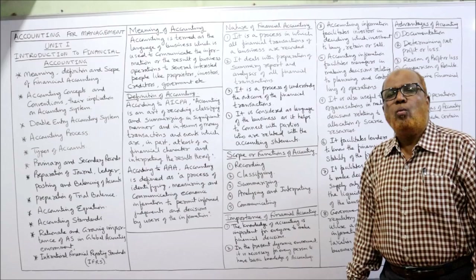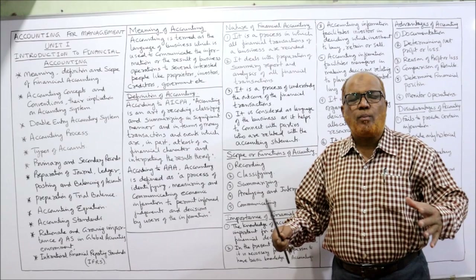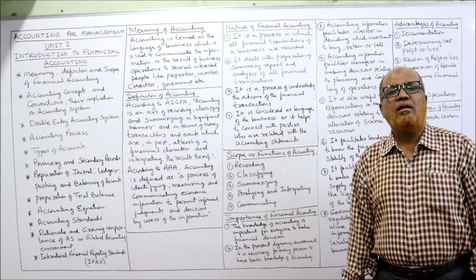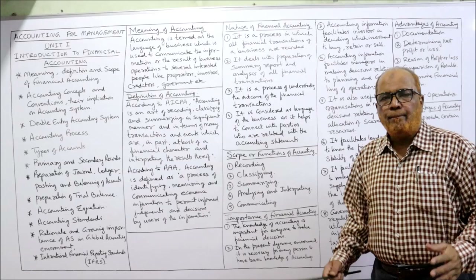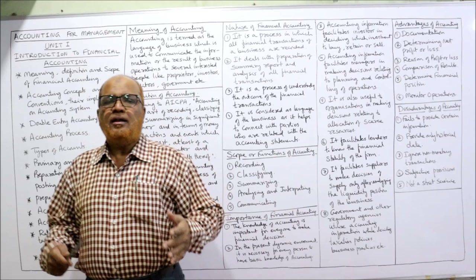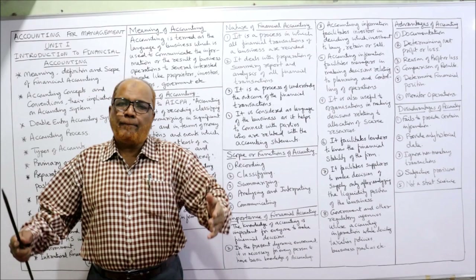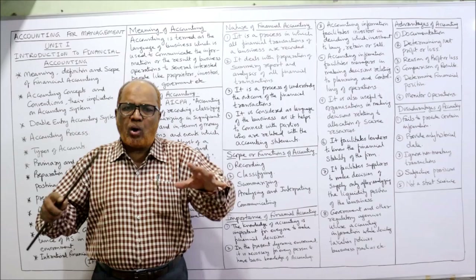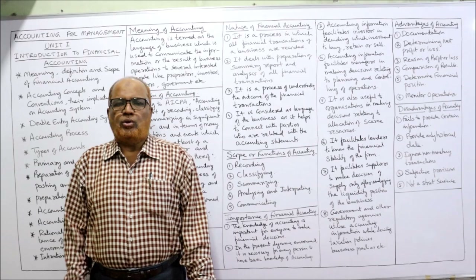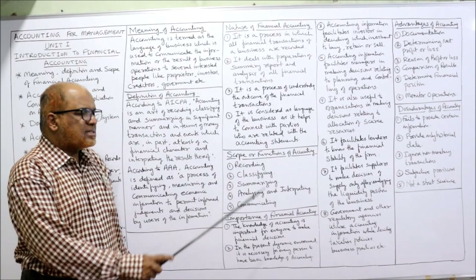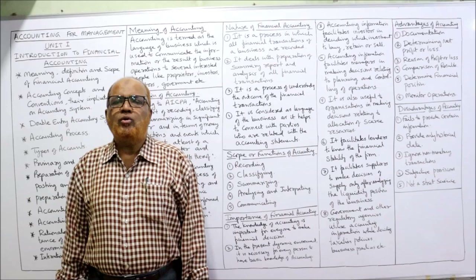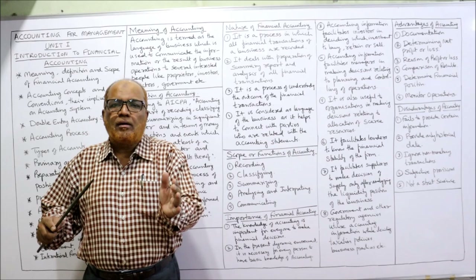Next comes the scope or functions of accounting — the activities involved. The first activity is recording: writing transactions systematically. A business conducts many transactions every day — purchasing goods, selling goods, paying expenses, receiving money. Every transaction must be recorded. The second activity is classifying: after recording, we put similar transactions at one place — grouping like transactions together.